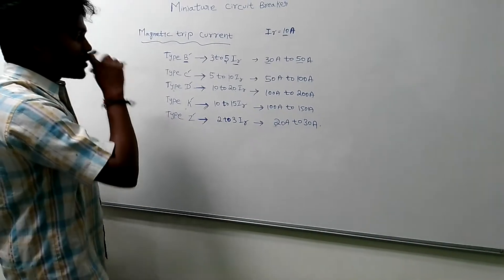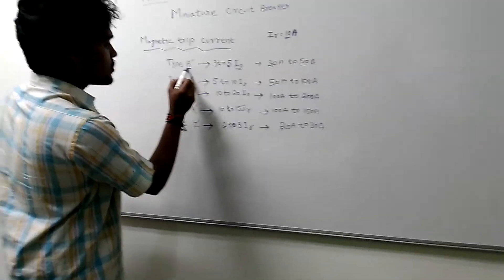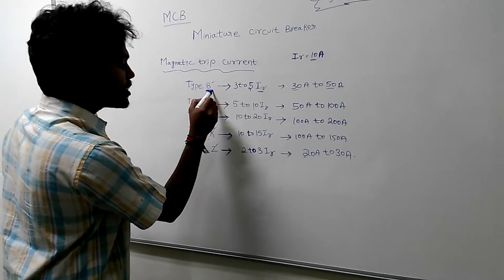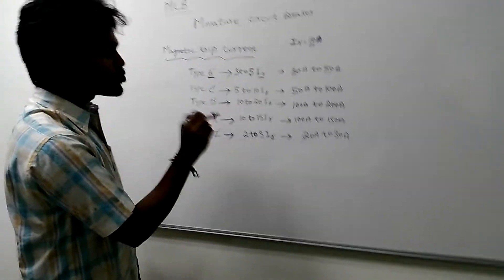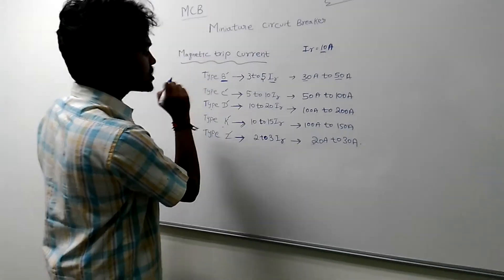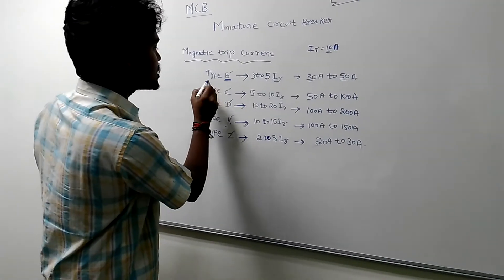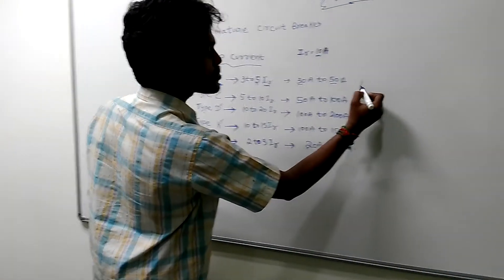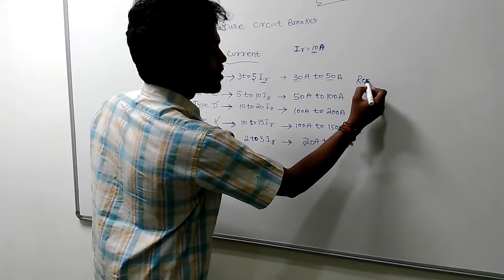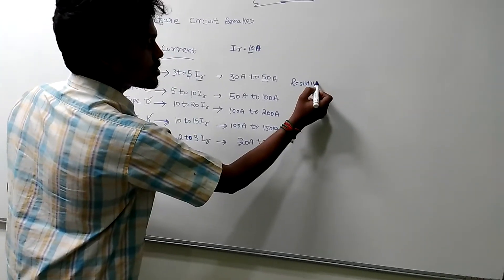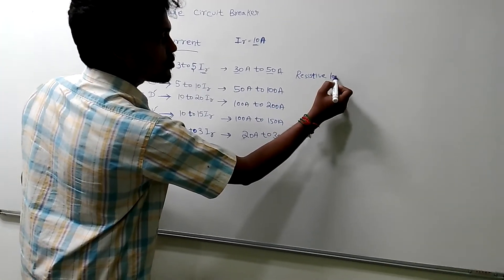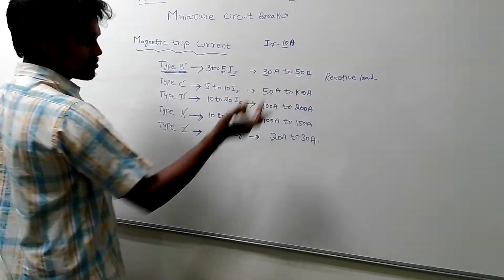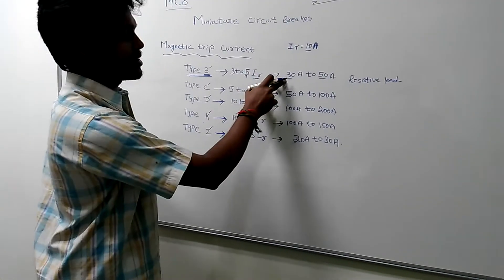For a Type B MCB, the switching surge is smaller, so it is used for resistive loads such as lighting and general resistive loads in residential applications.